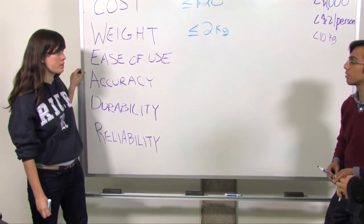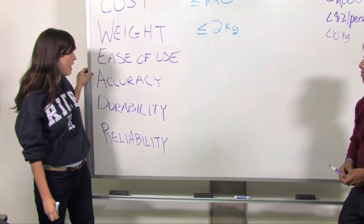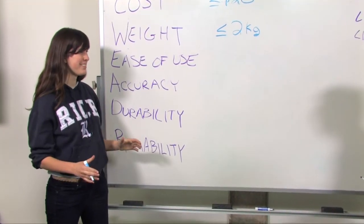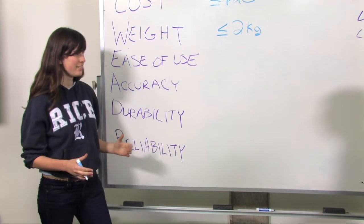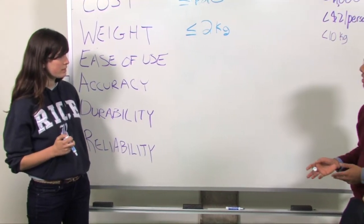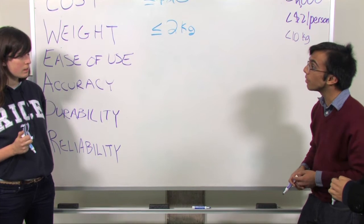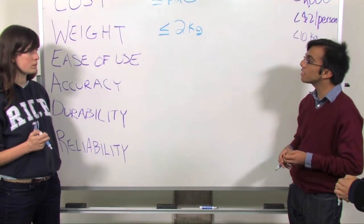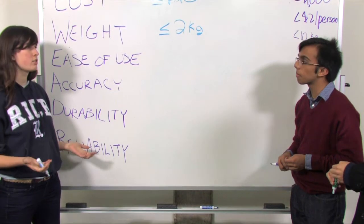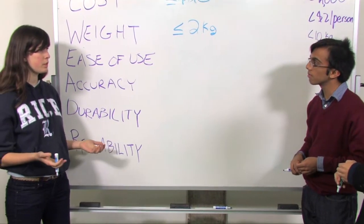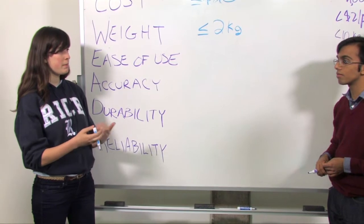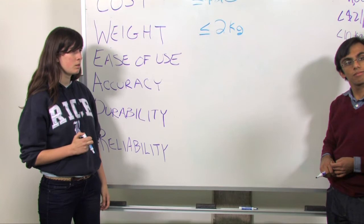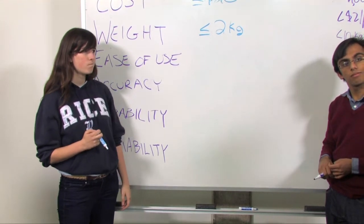Ease of use. So this is going to be how easy it is for somebody to use the device. How do you quantify that? I guess there could be a couple of different ways we could do it. We could look at the amount of time it takes, or the number of steps it takes to set up the device. Yeah. We have to consider the educational level of the end users in developing countries. They might not even be literate. So there's a lot of things to take into account.